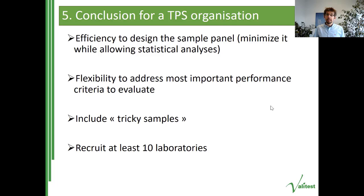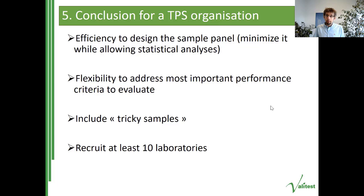In conclusion for this introduction: your sample panel needs to be designed efficiently, minimizing the number of samples while correctly addressing the weaknesses and performance of the test on a sufficient statistical basis. Some flexibility is allowed depending on the most important criteria to evaluate. One important element is that you must include tricky samples — samples close to the limit of detection, samples difficult to detect — in order to really evaluate the performance of your test. As stated in EPPO guidelines, you need to recruit at least 10 laboratories to generate sufficient data to extrapolate calculated performance criteria to the whole population of diagnostic laboratories with a minimal margin of error.